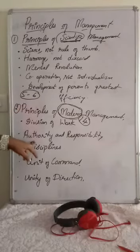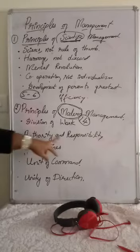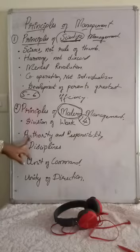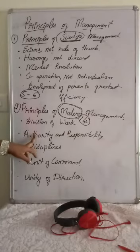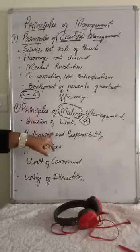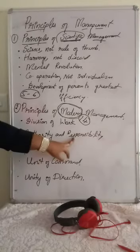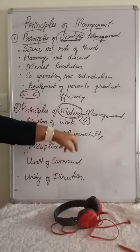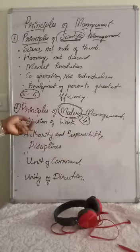The second modern principle is authority and responsibility. Authority refers to the rights of the superior to give orders to subordinates. Responsibility means the obligation for performance — the responsibility of the manager and the employee towards their work.